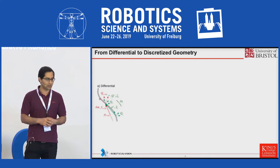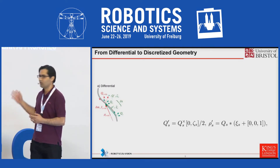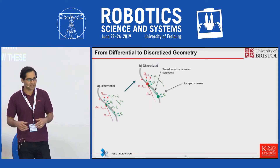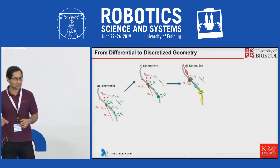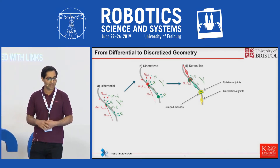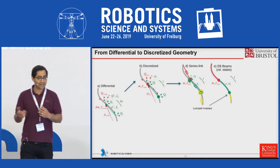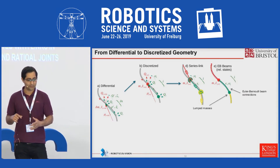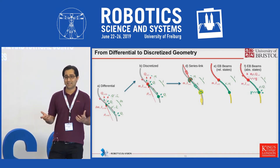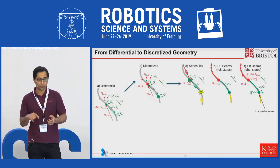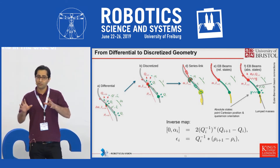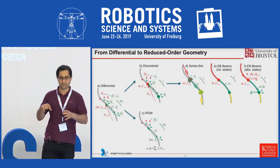Let's start with the differential kinematics — I assume you all know these equations. When I discretize, I talk about lumped masses connected with links. In the series rigid link case I have translational and rotational joints. In the Euler-Bernoulli with relative states I have a beam in between and strains are the states of the system. In the case of absolute states I consider knowing the position and orientation of the masses, so an inverse map is needed to calculate the strains.